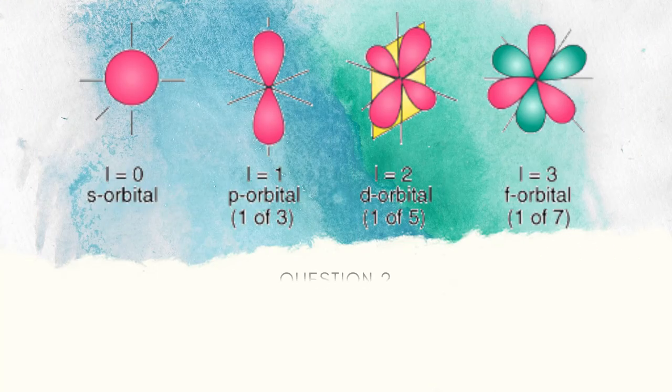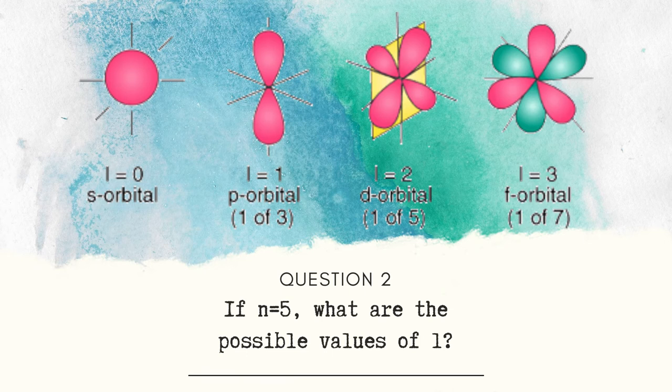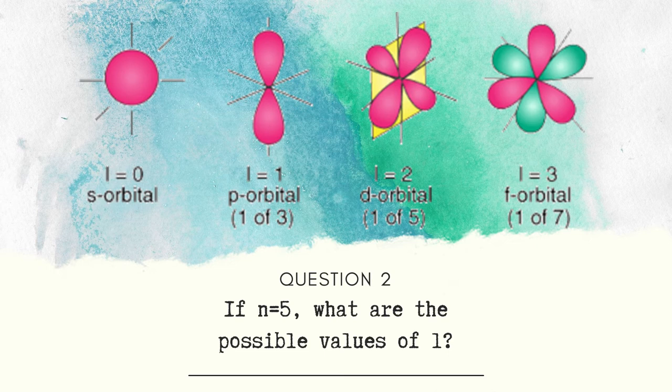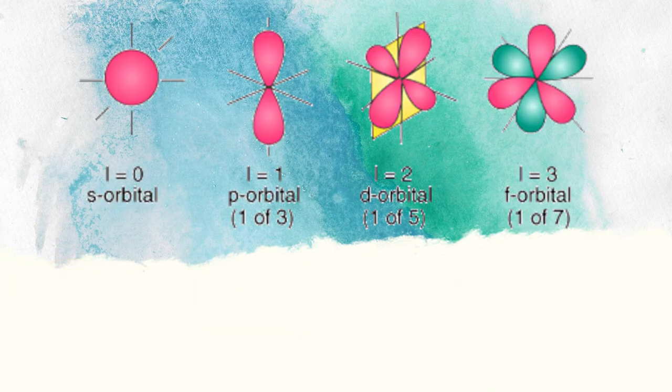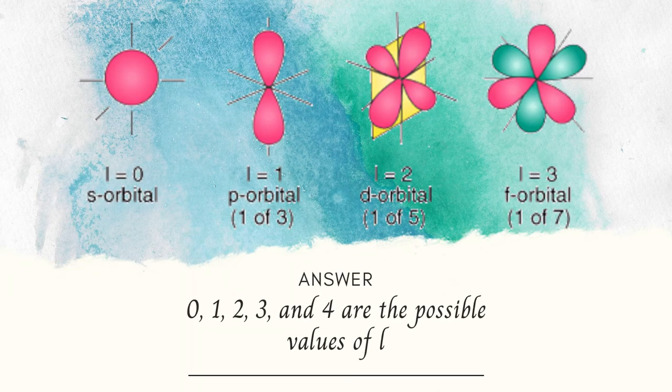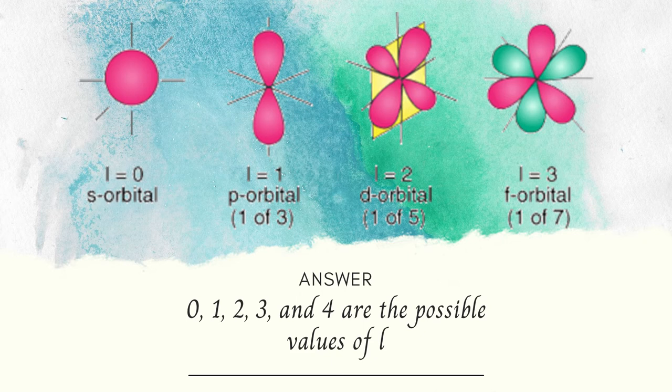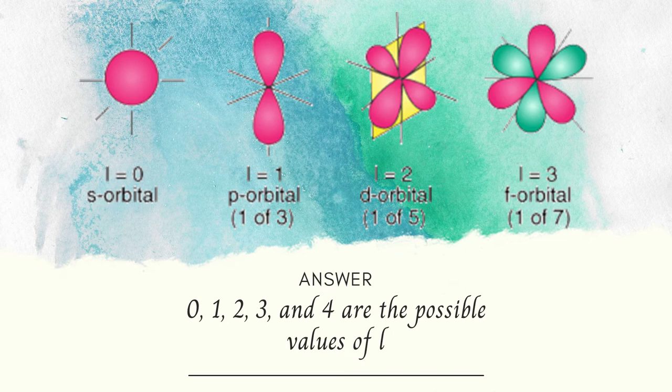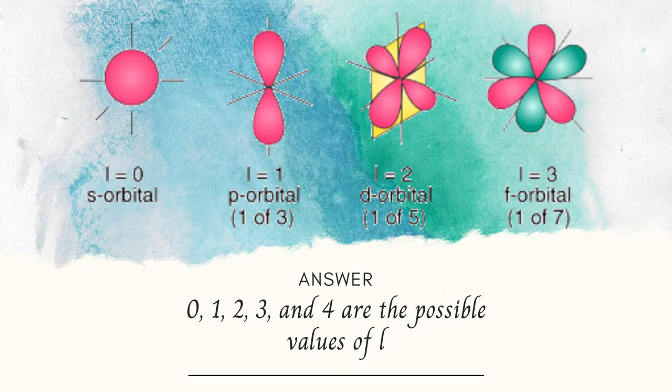Question number 2. If N is equal to 5, what are the possible values of L? The possible values of L are 0, 1, 2, 3, and 4. Since L can be 0 or a positive integer less than N minus 1.